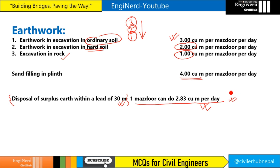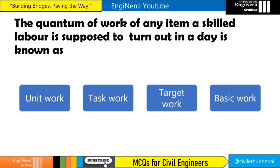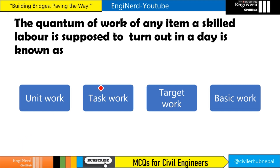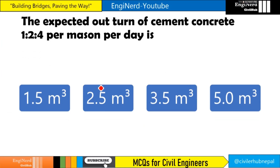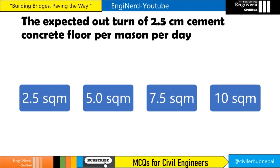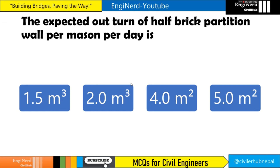Now some practice questions. The quantum of work an artisan is expected to turn out in a day is known as task work. The expected outturn of cement concrete 1:2:4 per day is 5 cubic meter — after 4 comes 5. The expected outturn of 2.5 cm cement concrete floor is 7.5 square meter. For a half brick partition wall: half is 0.5, reverse it to get 5.0 square meter per mason per day.